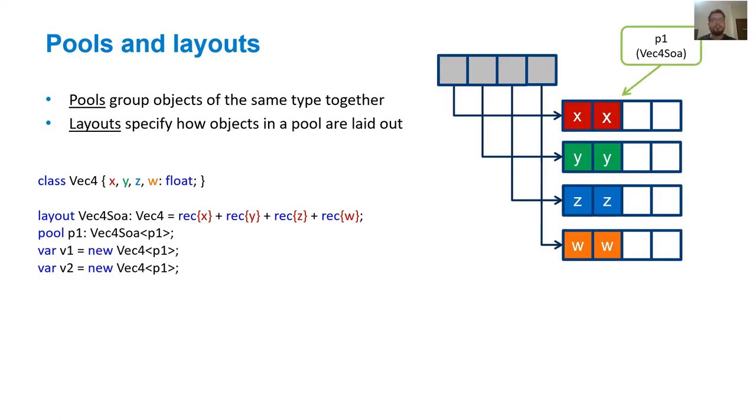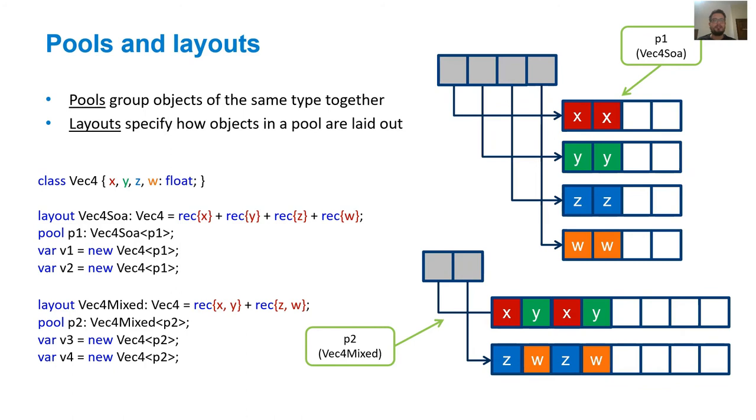We then construct two new Vect4 objects, V1 and V2. The angle brackets specify the pool as P1, hence they'll be constructed inside P1. The top-right diagram shows how pool P1 and objects V1 and V2 will be represented in memory. Now, let's have a look at another example. Similar to the first example, this example declares the layout Vect4Mixed, which is a mixed layout. The X and Y coordinates are placed in one cluster, whereas the Z and W coordinates are placed in another. Similarly, we construct pool P2, which will adhere to layout Vect4Mixed, and then construct two new objects inside it, V3 and V4. The bottom-right diagram shows how pool P2 and objects V3 and V4 will be represented in memory.